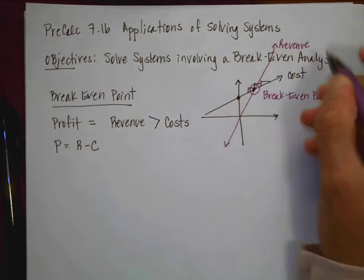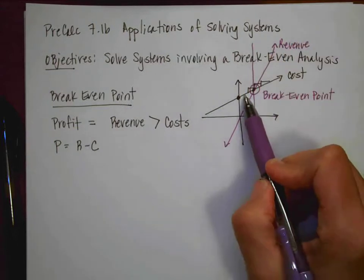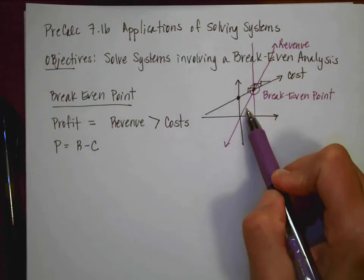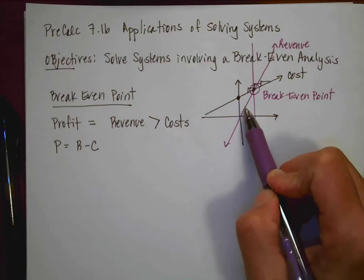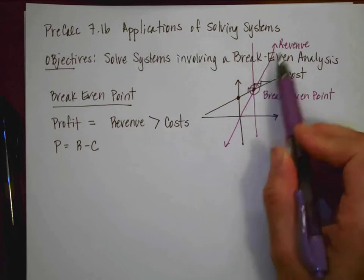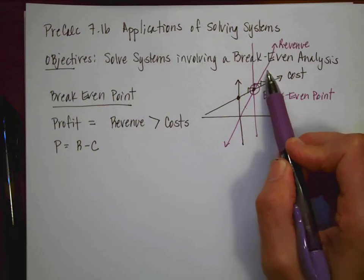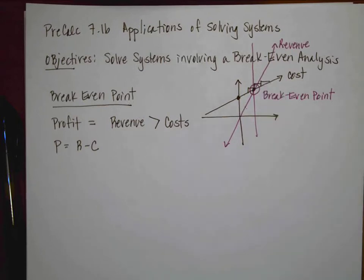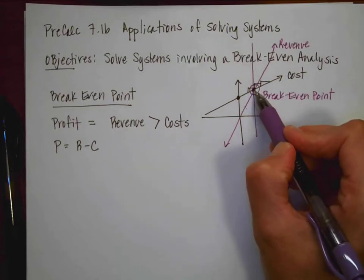If you'll notice, to the left of that point, cost is bigger than revenue. So that means that it's more expensive than the money that I'm making. On the other side of the break-even point, notice that now the revenue exceeds the cost, which means I'm making money. So oftentimes we want to find this point. It's called the break-even point.